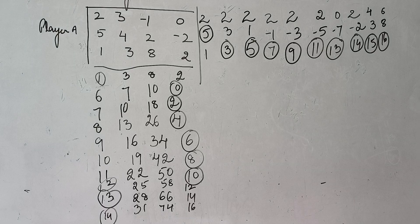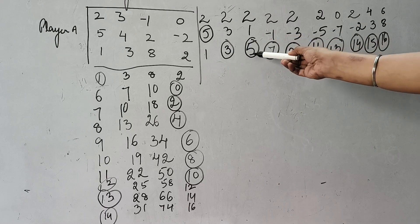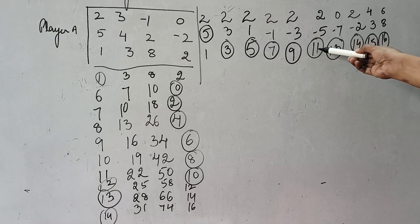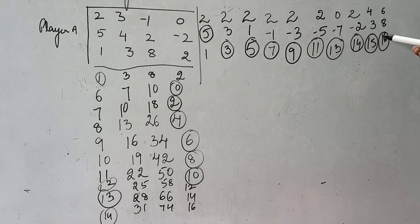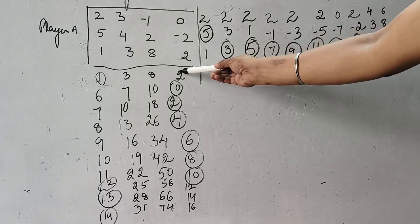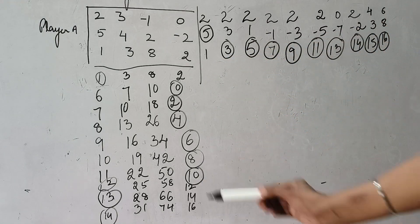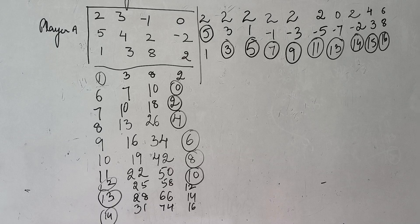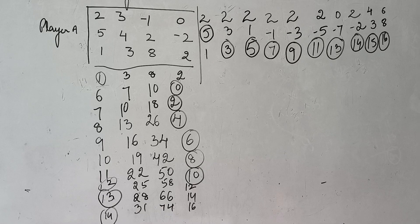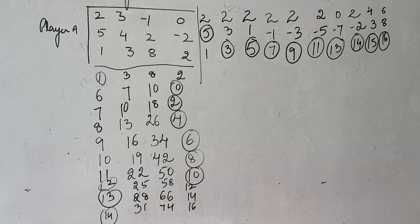Now just count — we have reached 10 rows on both sides. Once 10 rows are complete, we write the approximate value of game and the approximate strategies.